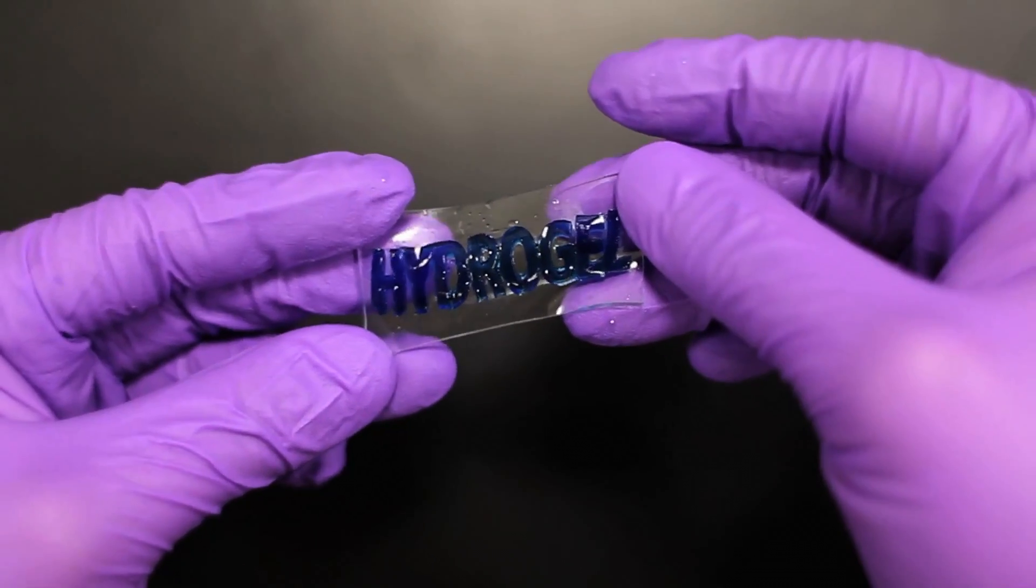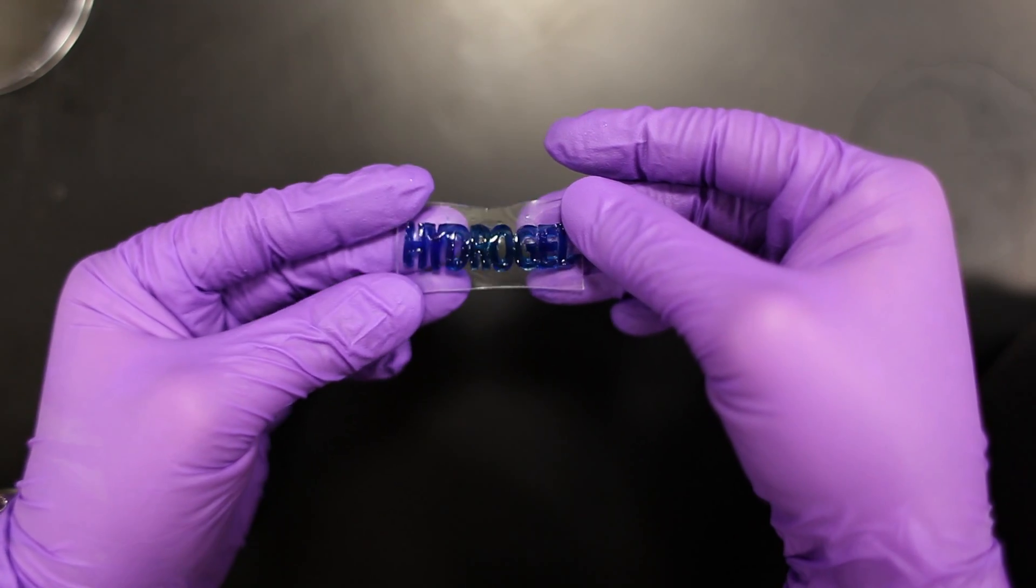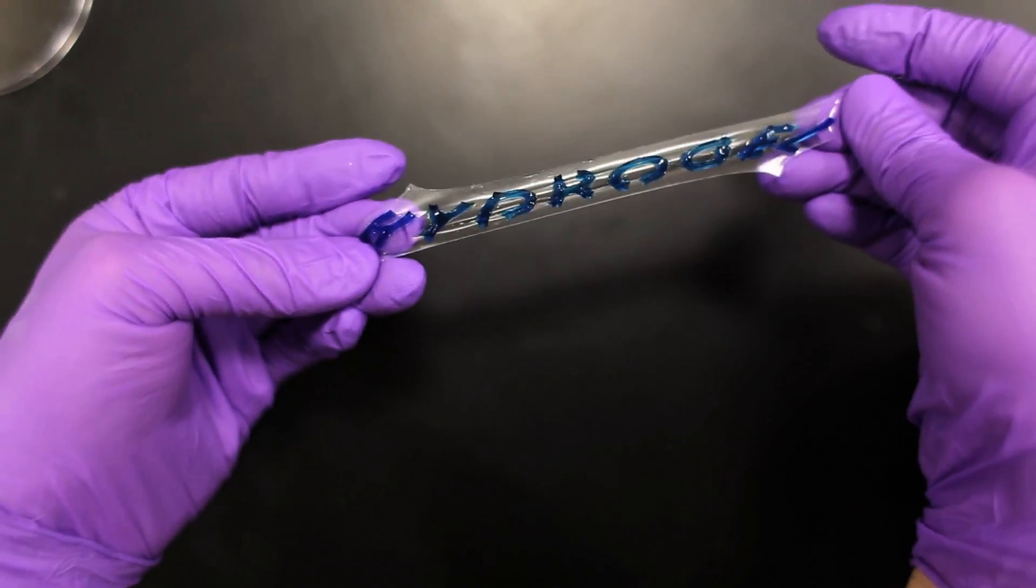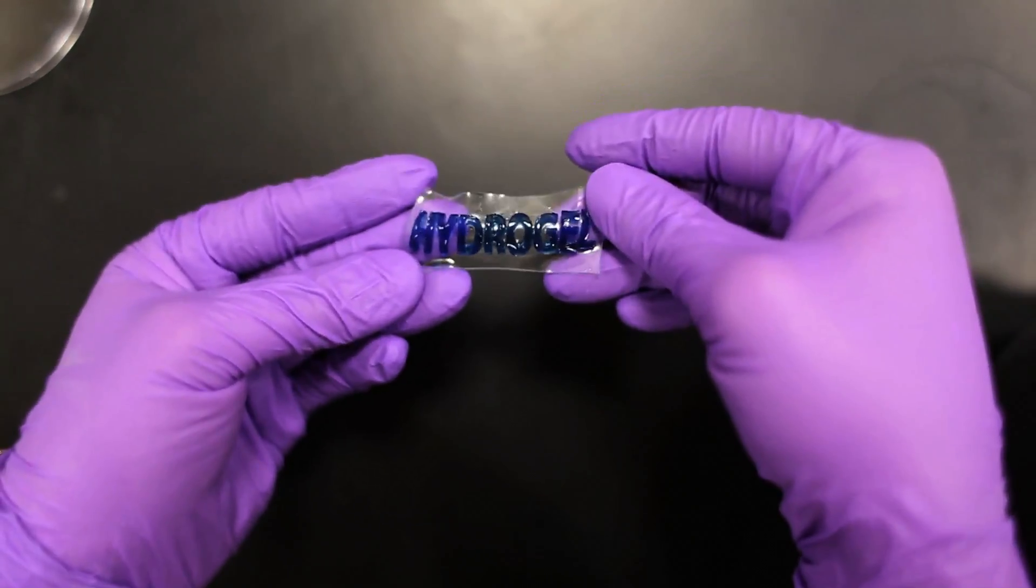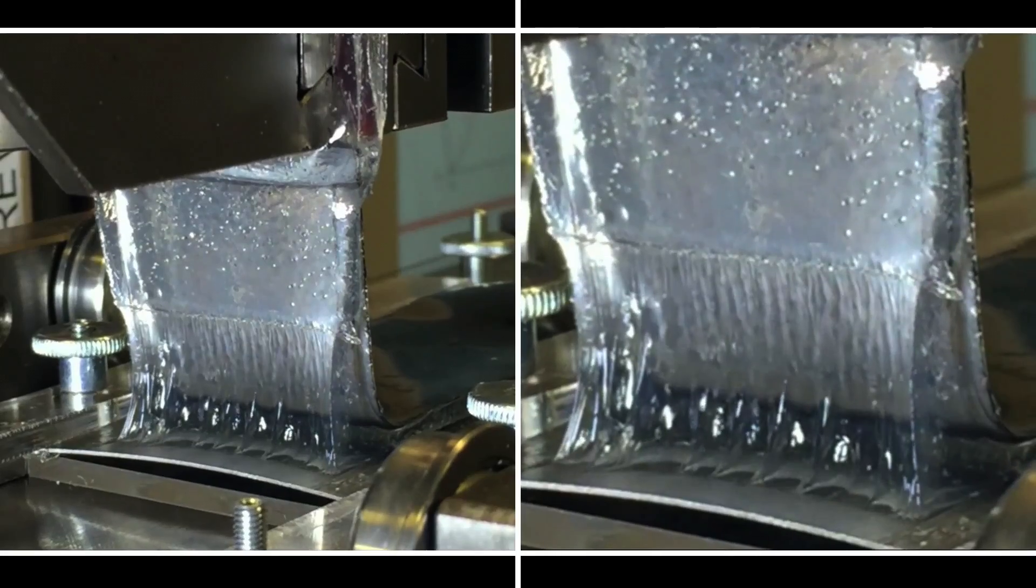Hydrogels are a gelatin-like polymer material made mostly of water. They are stretchy and robust, and in the case of a hydrogel developed by a team at MIT, they can be extremely sticky.